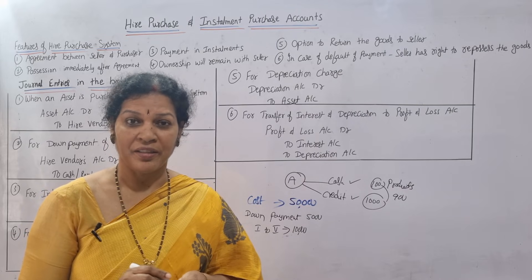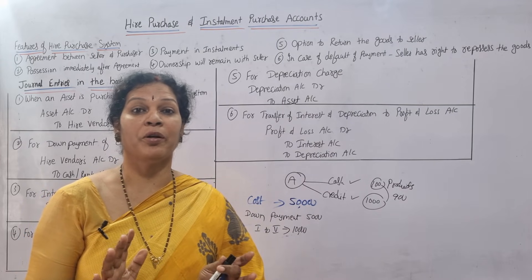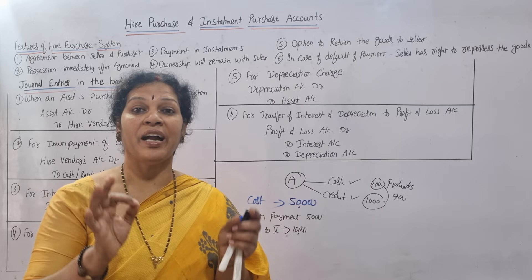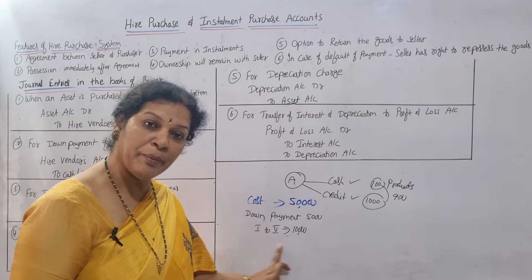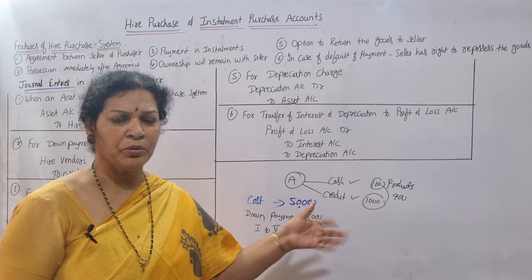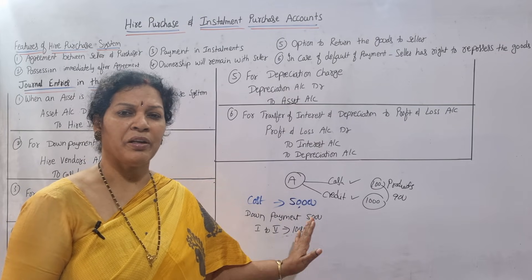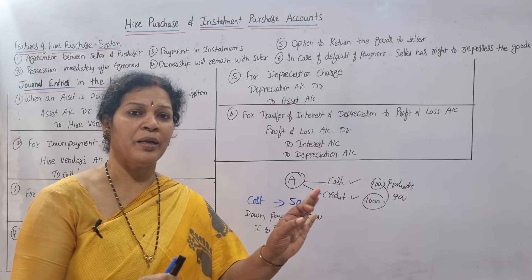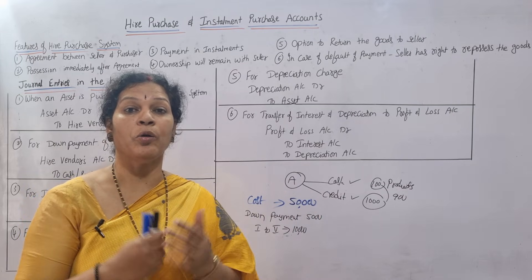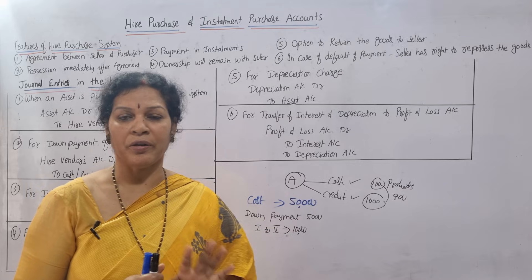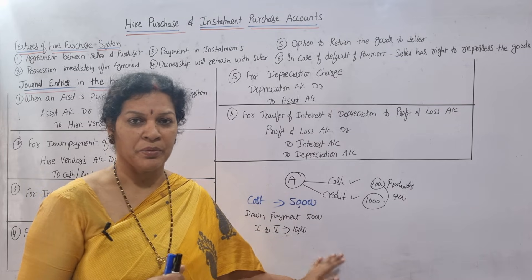This is the Hire Purchase System. Possession is transferred — I took the product — but the rights of the product are not transferred to me until I make the last payment. I have five installments of ten thousand rupees to pay, and until I pay the fifth and final installment, I will not get the ownership. Only the product is given to me.